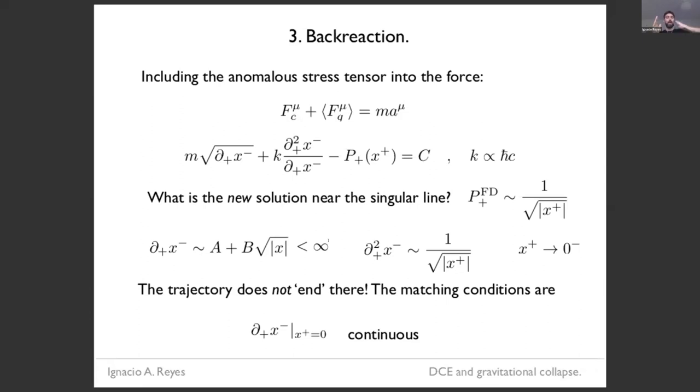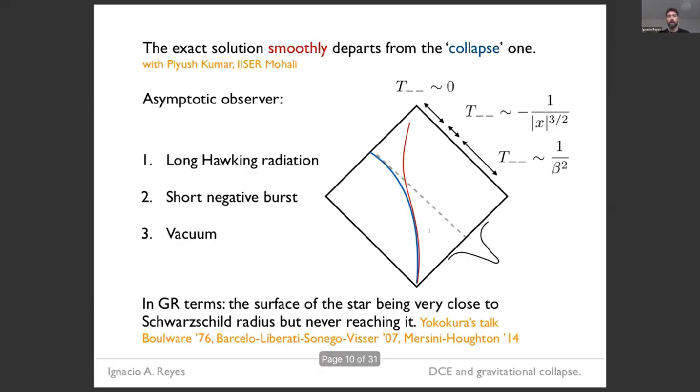Therefore, well, the acceleration does diverge at that point, but the conclusion is that the trajectory doesn't end there. It doesn't go all the way to the boundary. It's just going to cross that line. And therefore, because it reaches that point, we need to specify what happens after this singular line. And that leads to some matching conditions, which in this case is the requirement that the slope has to be continuous.